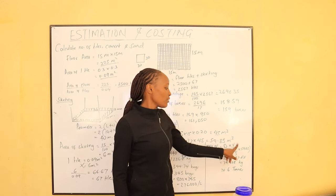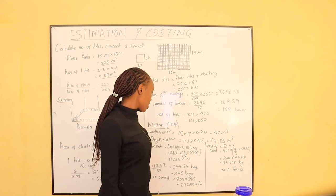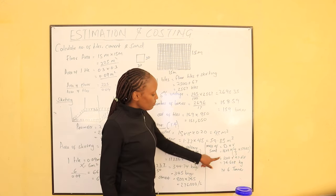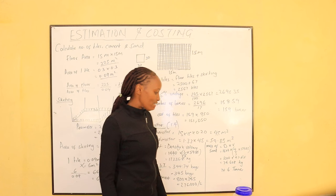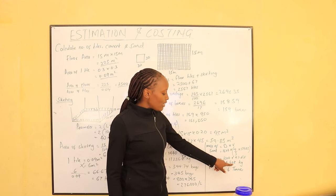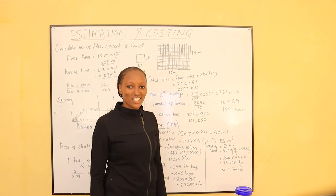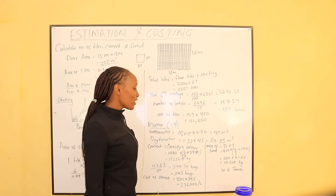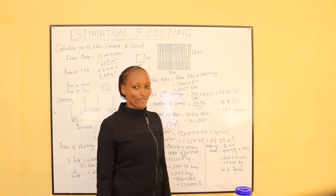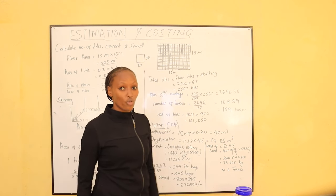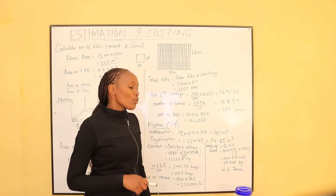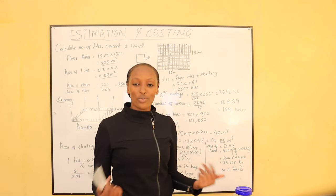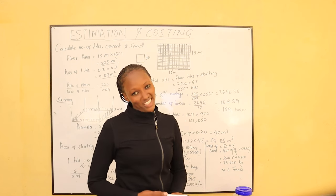To find the quantity of sand, we use mass = density × volume. The density of sand is 1,600 kg/m³. The volume of sand is 4/5 of the dry mortar volume. The mass of sand is 1,600 × (4/5 × 5.985) = approximately 7,661 kg, which is about 7.7 tonnes. If buying sand by the lorry at 35 tonnes per lorry, we need approximately 2 lorries. At 50,000 shillings per lorry, the cost of sand is 100,000 shillings.